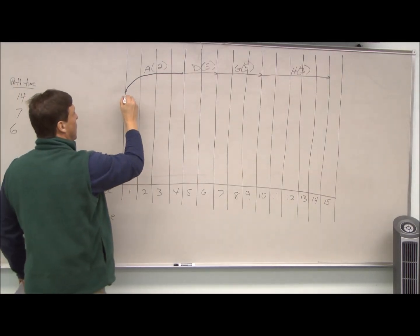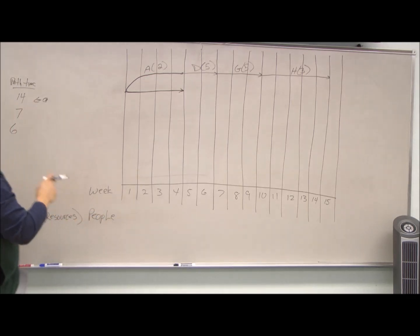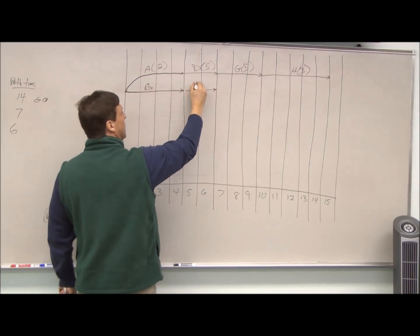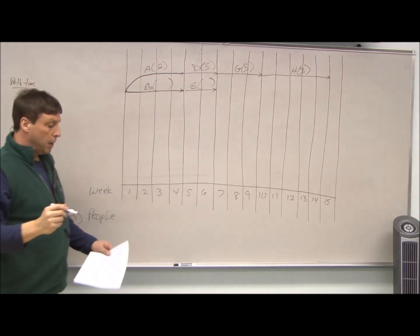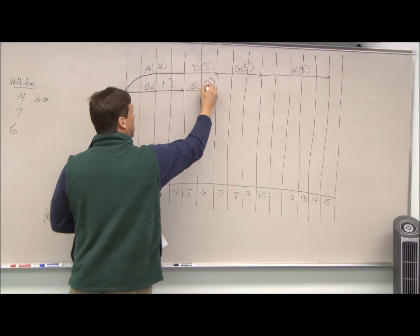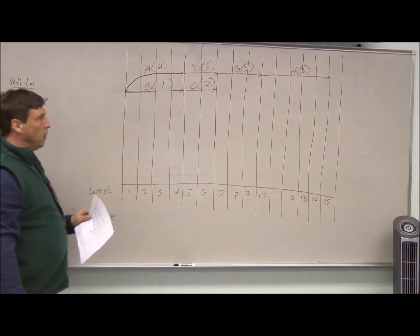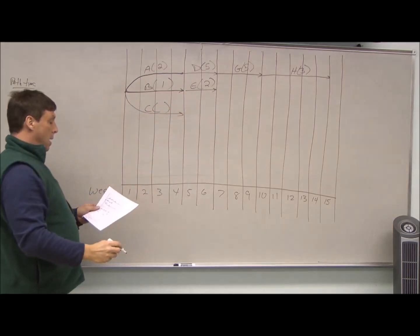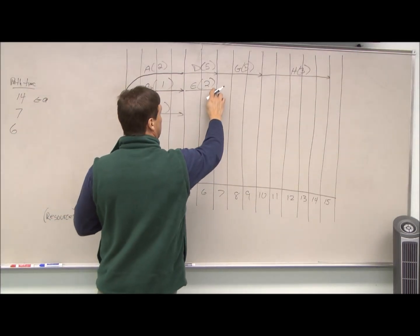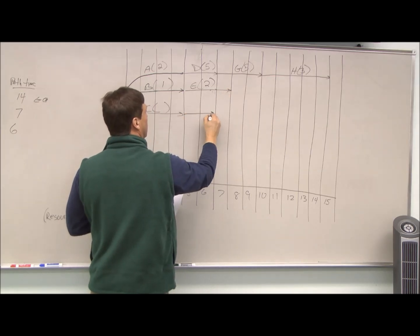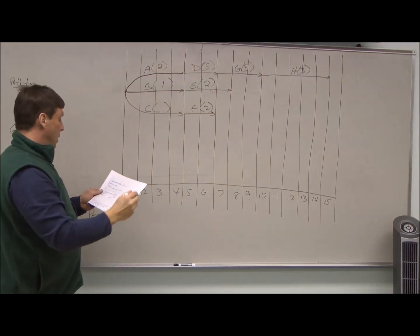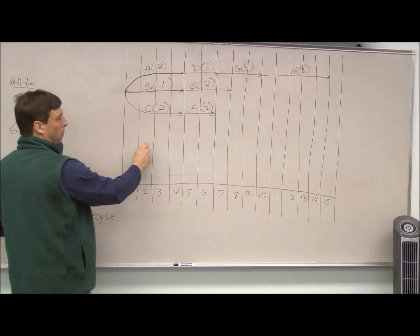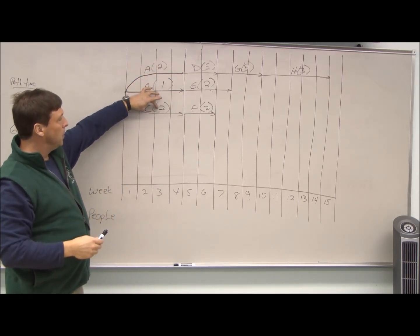Now I do the same thing with the other two paths. For B, we know it took four weeks. The next is E, and E takes two weeks. For resources, B takes one person and E takes two people. Finally, we do the same with our last path. We have C, which is three weeks, and F, which is two weeks. I put in how many resources they need.